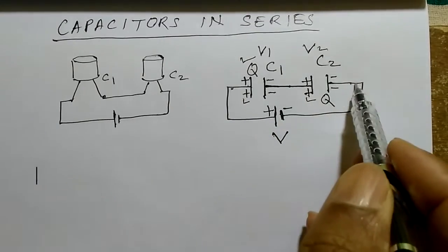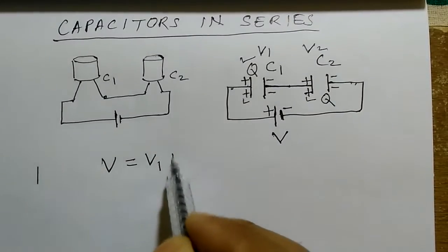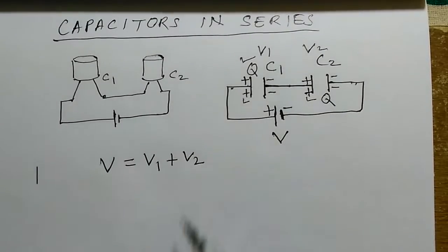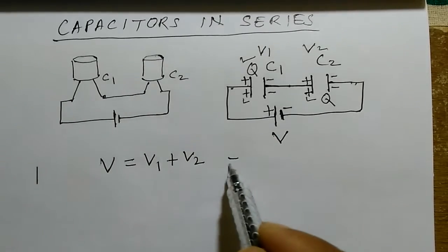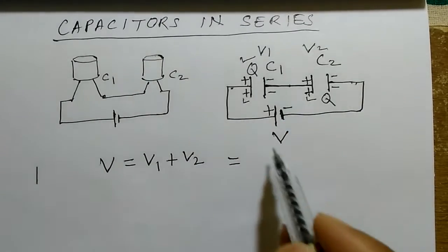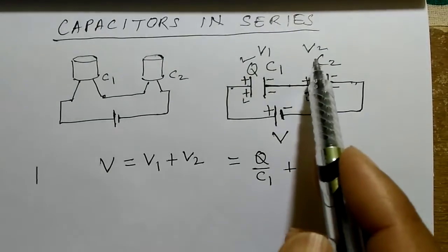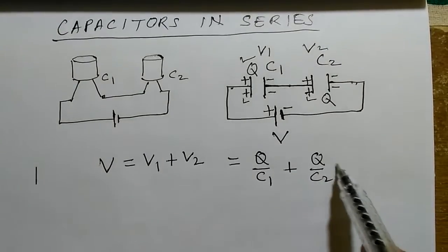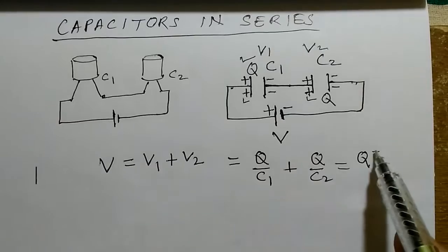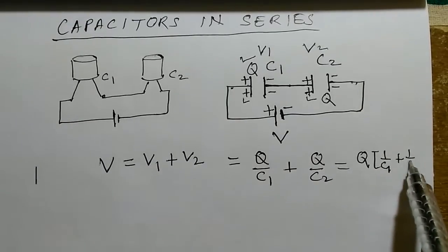Which we can get: V1 is Q upon C1, and V2 will be the charge upon C2, Q upon C2. This is Q times 1 by C1 plus 1 by C2.